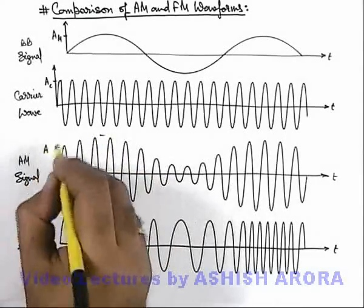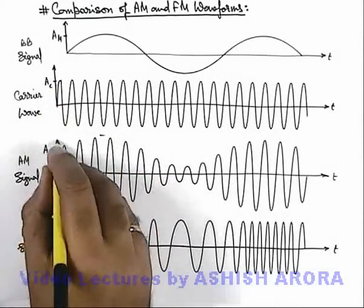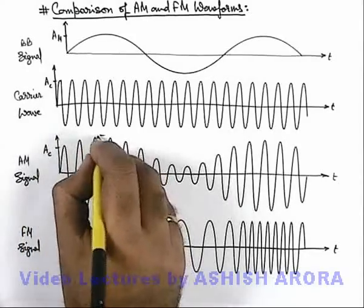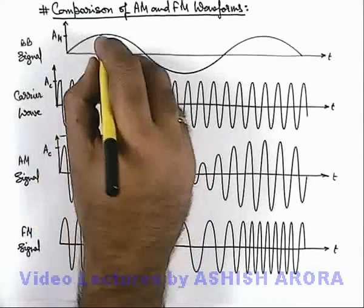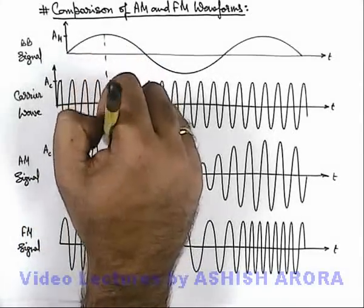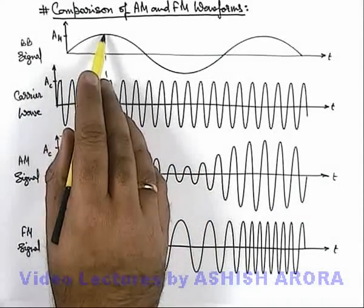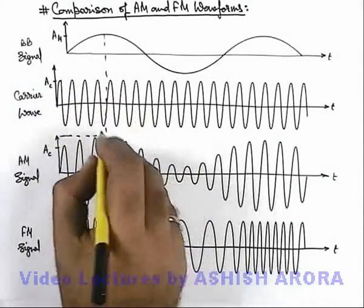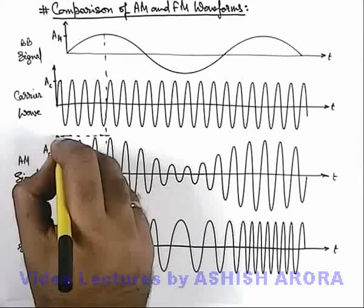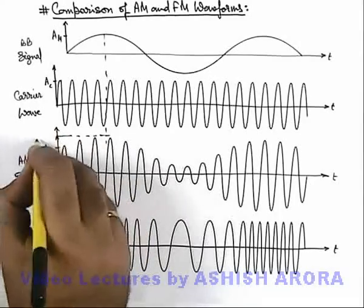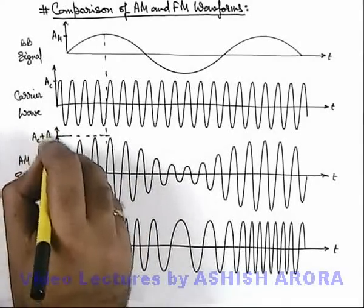Initially, here you can see, this will start with the amplitude of carrier wave. And when the amplitude of baseband signal is reached and its displacement, the displacement amplitude of the AM modulated wave becomes Ac plus Am.